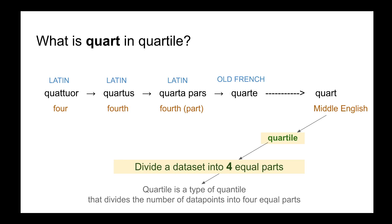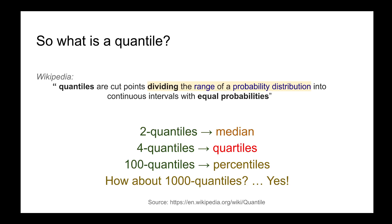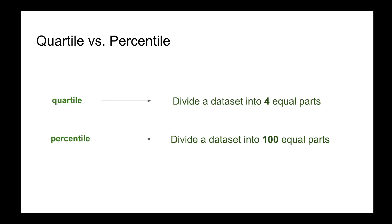This is related to quantile as well. A quantile is about dividing the range of a probability distribution. Two quantiles means median; dividing into four quantiles means quartile; and dividing into one hundred quantiles is called percentile. Quantiles can go up to one thousand or more. Briefly, quartile divides a dataset into four equal parts, and percentile divides it into one hundred equal parts.